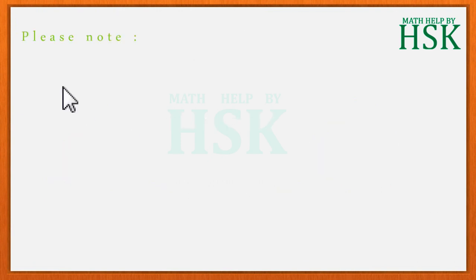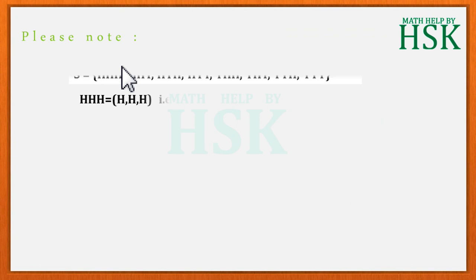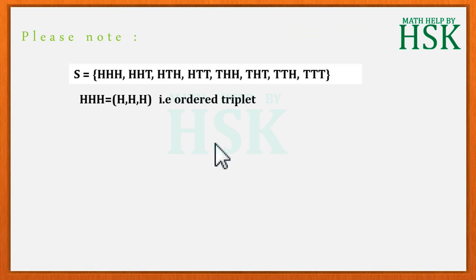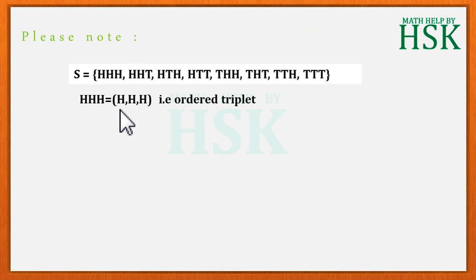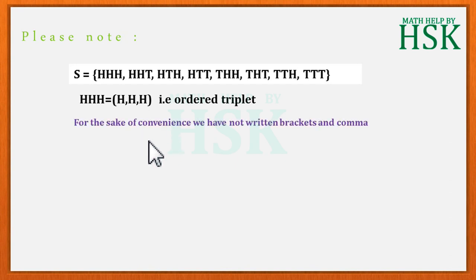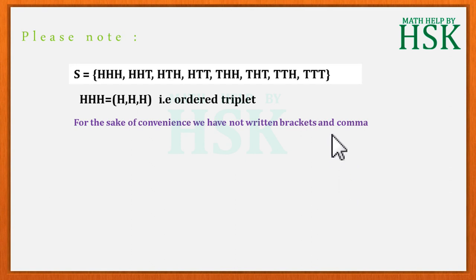It should be noted that in the sample space S, each event represents an ordered triplet as shown. It is for the sake of convenience that we have not written brackets and commas.